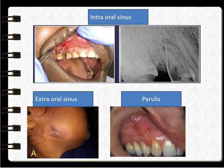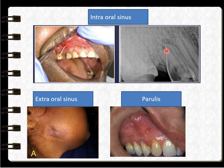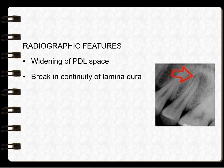An intraoral sinus may be present — here you can observe a root and sinus formation. In this radiograph, gutta-percha is placed from the sinus and can be seen reaching the apex of the tooth. An extraoral sinus is also called a gumboil. Radiographic features include widening of the periodontal ligament space and breaking of the continuity of the lamina dura.